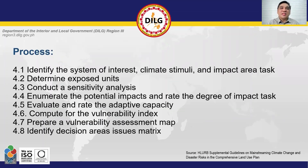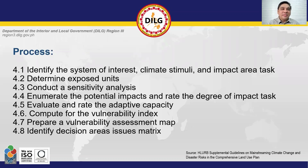These are the processes we need to undergo to achieve the desired goals: identify the system of interest, climate stimuli, and impact area; determine exposed units; conduct a sensitivity analysis; enumerate the potential impacts and rate the degree of impact; evaluate and rate the adaptive capacity; compute for the vulnerability index; prepare a vulnerability assessment map; and identify decision areas, issues, and matrix.